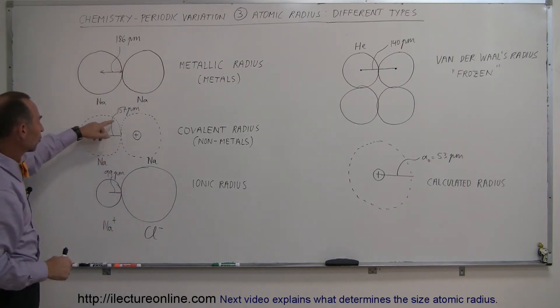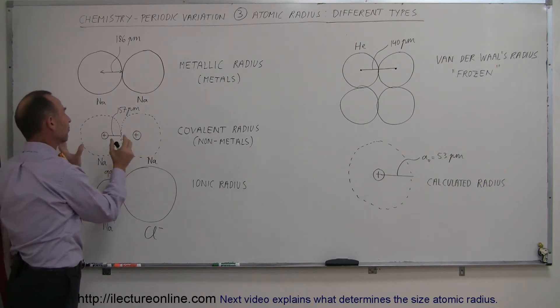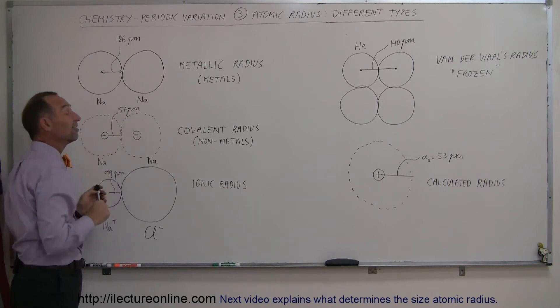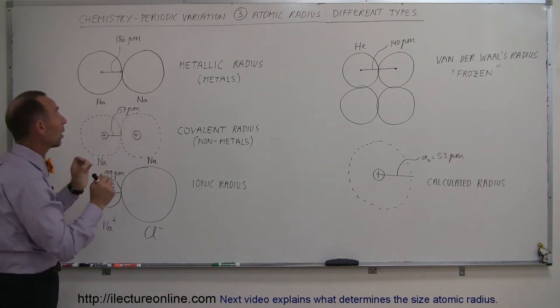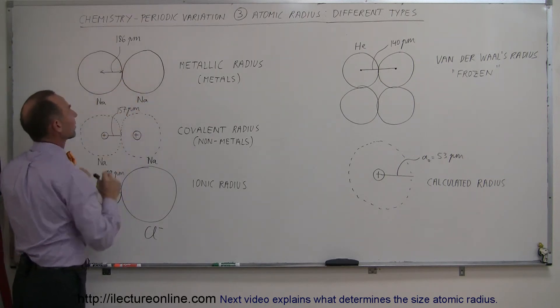And so in this case, for sodium, when sodiums come together and form covalent radii, the radius of the sodium atom is only 157 picometers rather than 186 picometers. So the nuclei actually come closer together than they would be if they're in a metallic state.